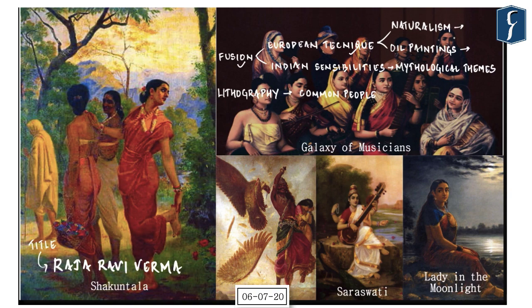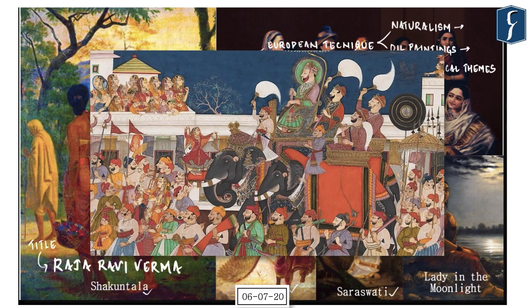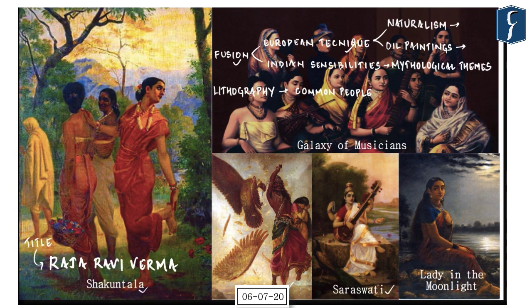The European element in his work mainly deals with technique: his paintings were oil paintings, a European style, and his art was marked by naturalism — a style of representation based on accurate depiction of details. If you see his paintings like Jatayu, Saraswati, and Shakuntala, they depict mythology but look almost real — a marked shift from traditional Indian painting. The Indian elements deal with themes, as he used European technique to draw Indian mythological stories.